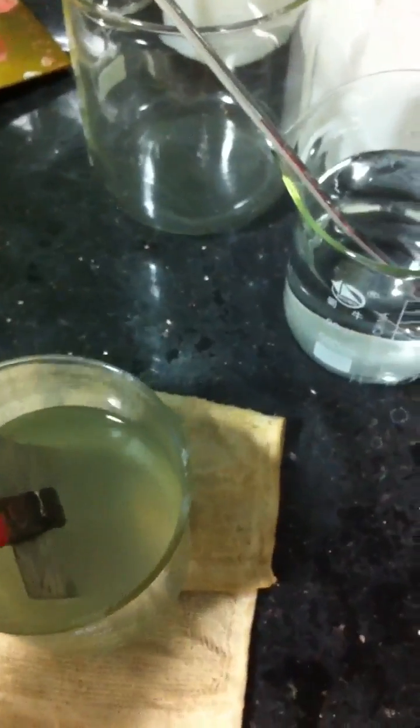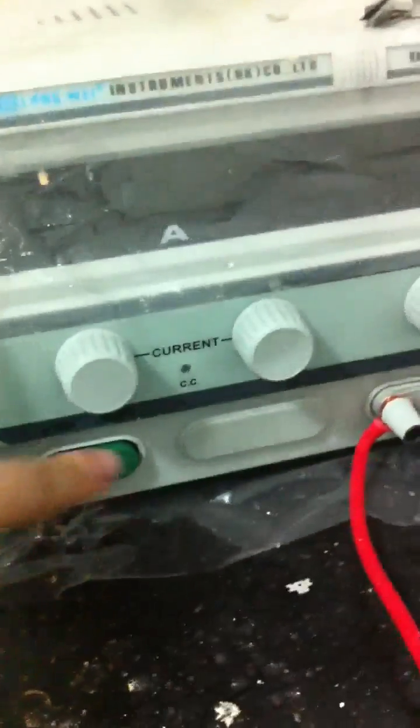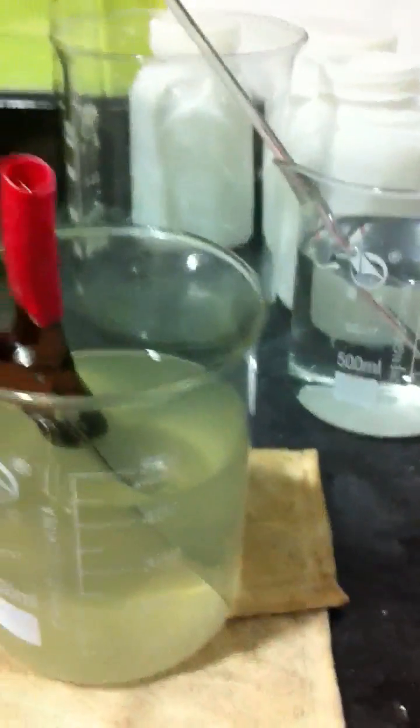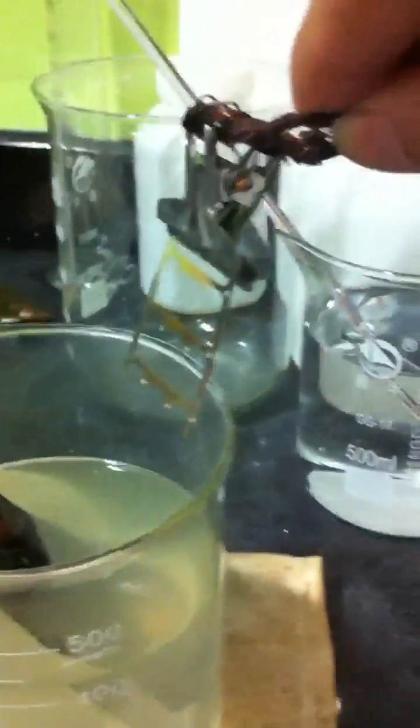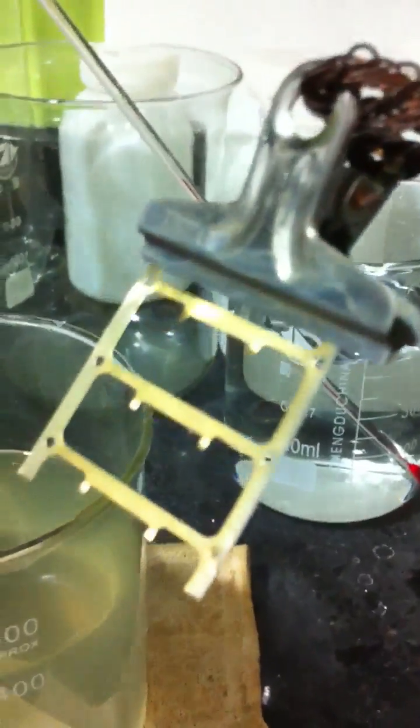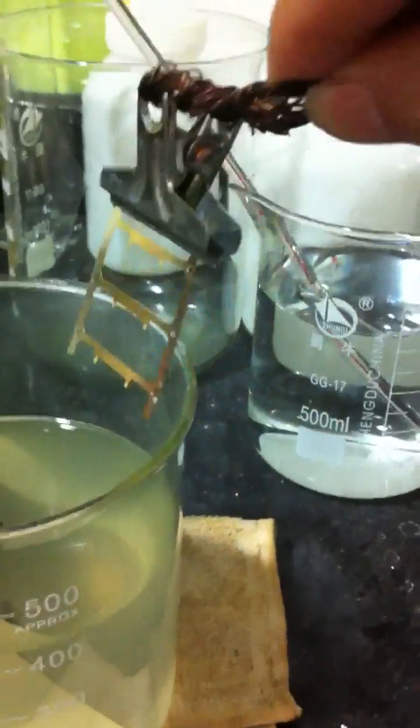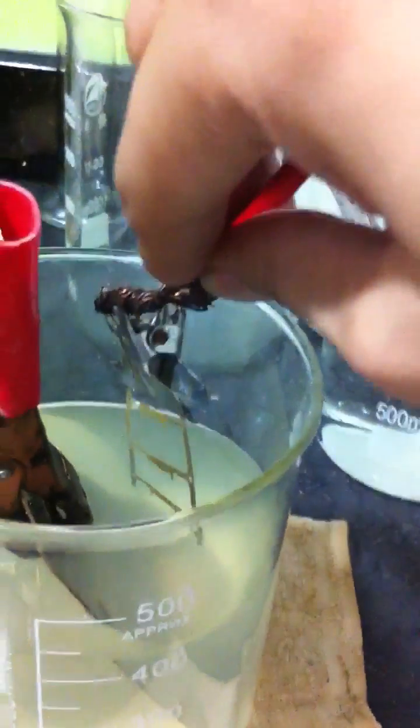Now I put the stainless board into the chemical, then I turn on the machine. Now you can see there is still gold on it. Now I put it in the solution.